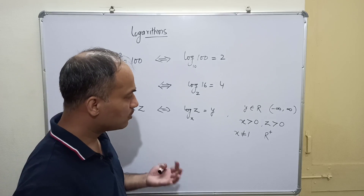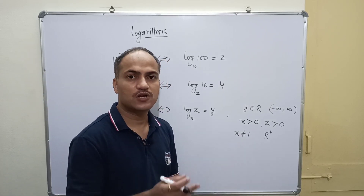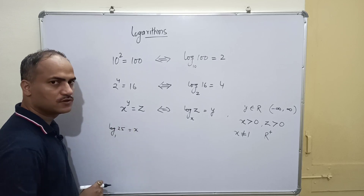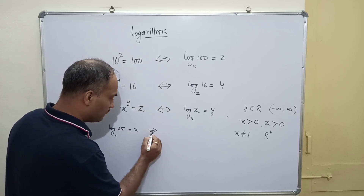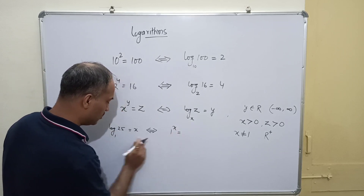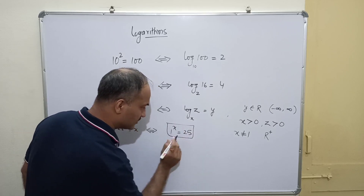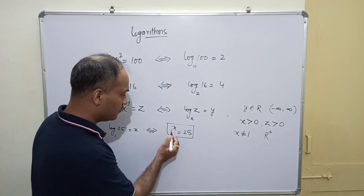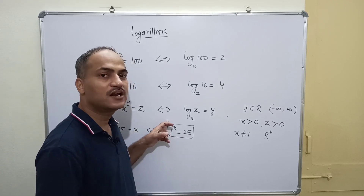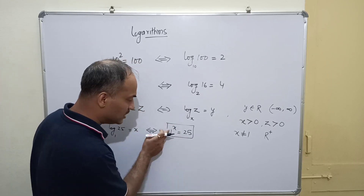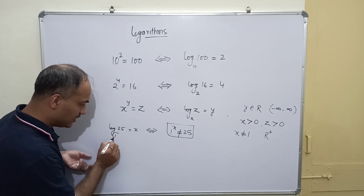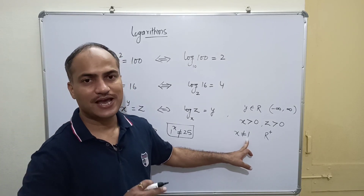There is one more restriction on x: the base x cannot equal 1. Why? Suppose log base 1 of 25 equals x. Converting to exponential form: 1 to the power x equals 25. But 1 raised to any real number is always 1, so it can never equal 25. That is why the base cannot be equal to 1.